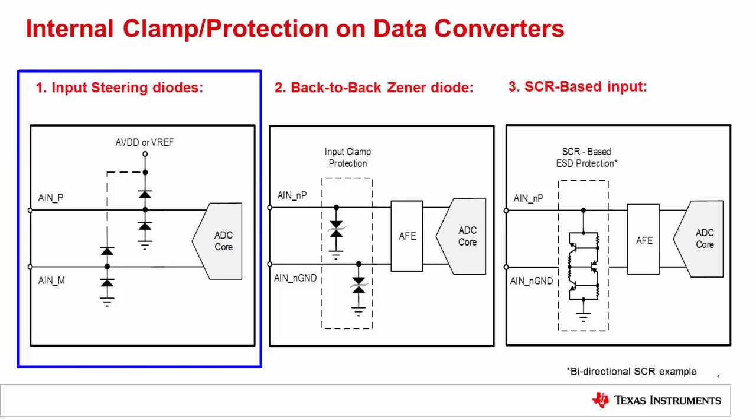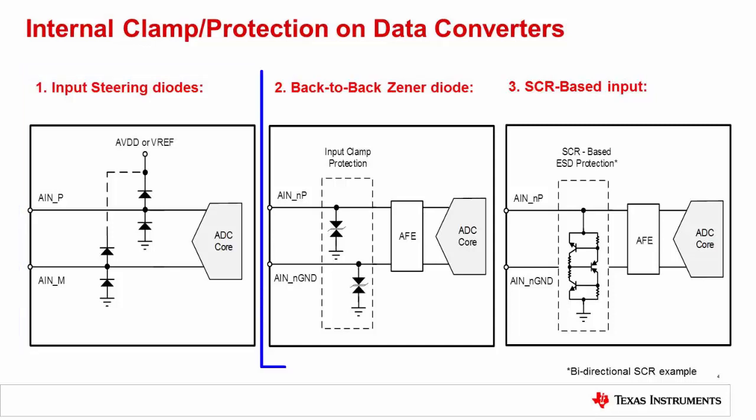This slide shows the internal diagram for three different approaches to protect against ESD. These are inside the device and are designed to protect against out-of-circuit ESD events. The first and most common type are the internal input steering diodes, which redirect ESD signals applied to the input toward the power supplies. Another type are back-to-back Zener diodes, which remain off during normal operation and turn on when the input signal approaches the absolute maximum ratings. This type is especially useful when the input range of the device is wider than the power supply voltage.